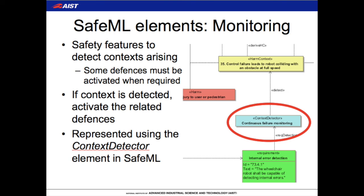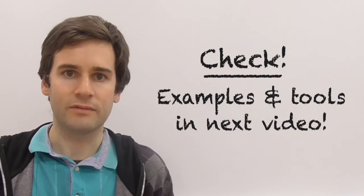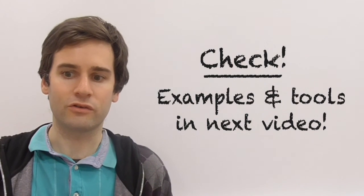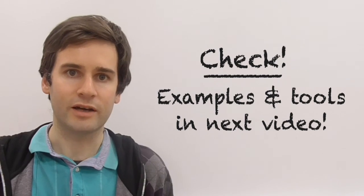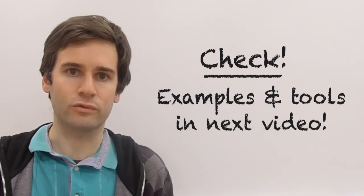In SafeML, monitoring systems are represented by the context detector element, which is related to the harm context that it detects. This indicates a feature used in the system to detect the status of the system and determine when it is in a hazardous situation. That's what I'm going to cover today, and next time I'm going to show you an example of producing a single diagram for a safety model and talk a bit about tools.